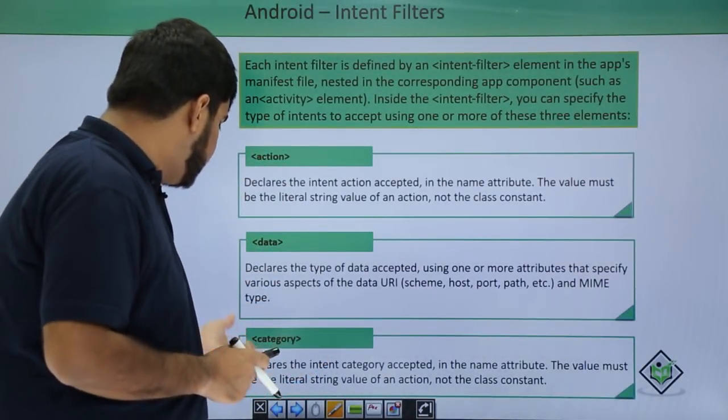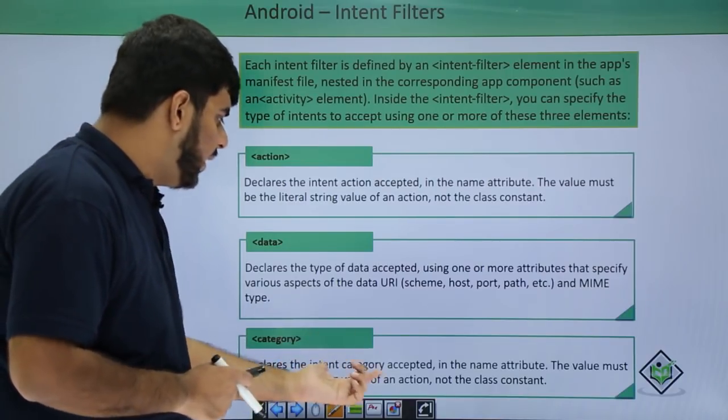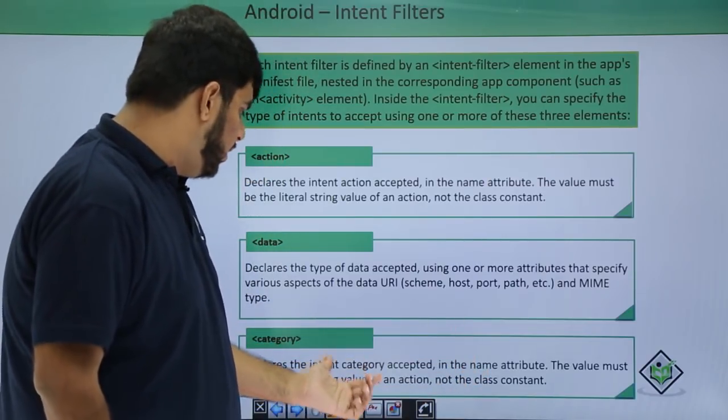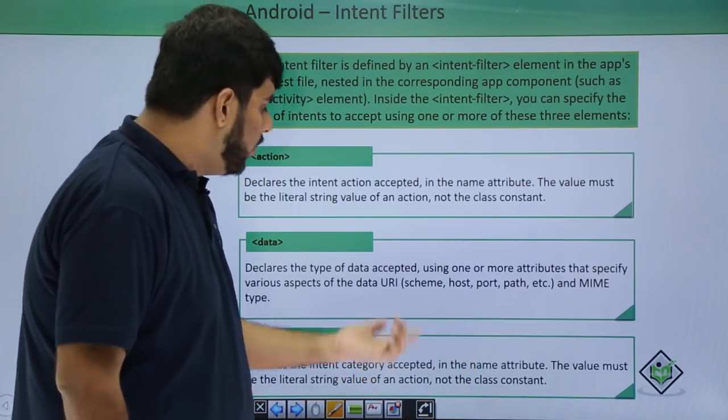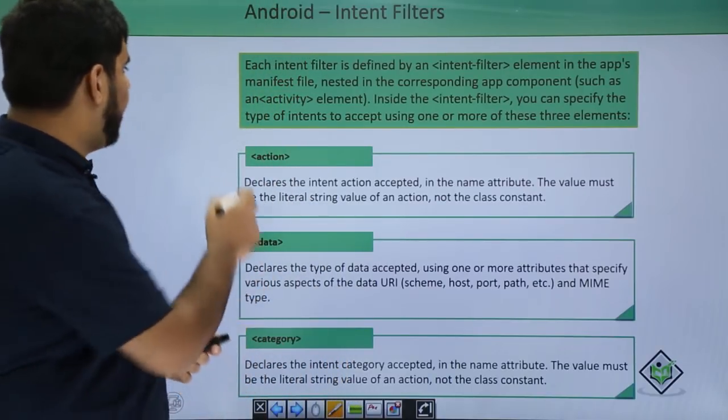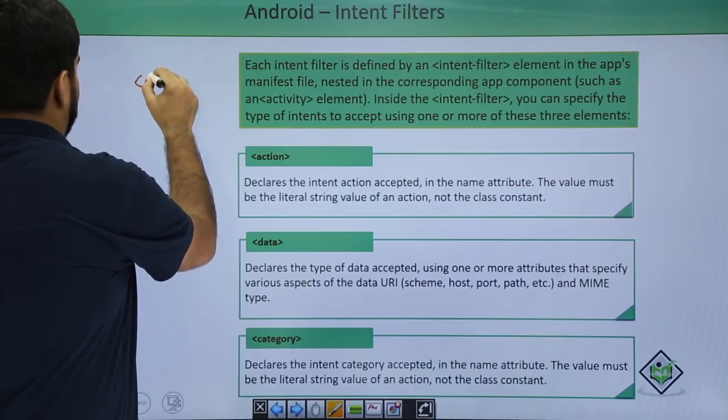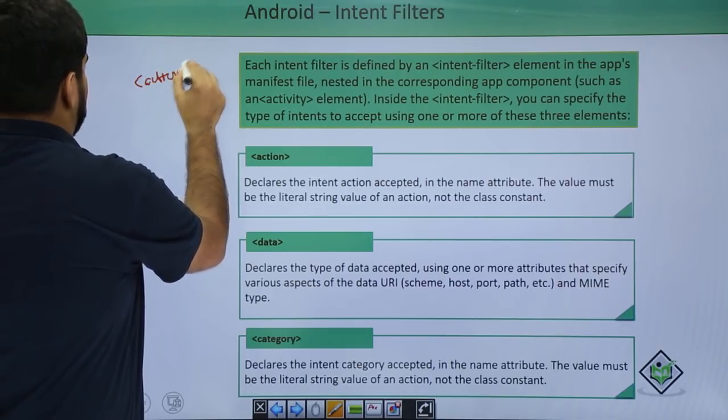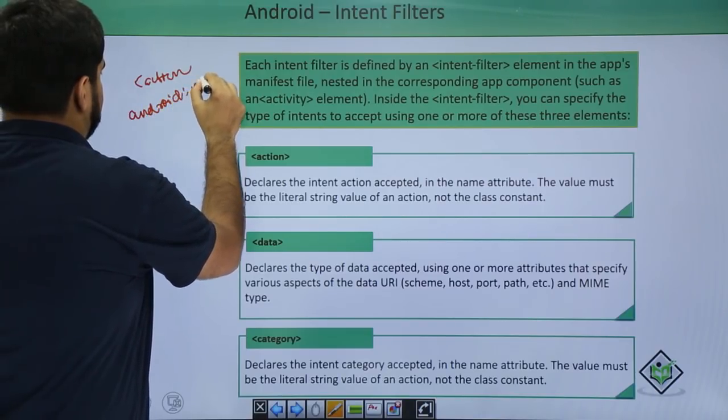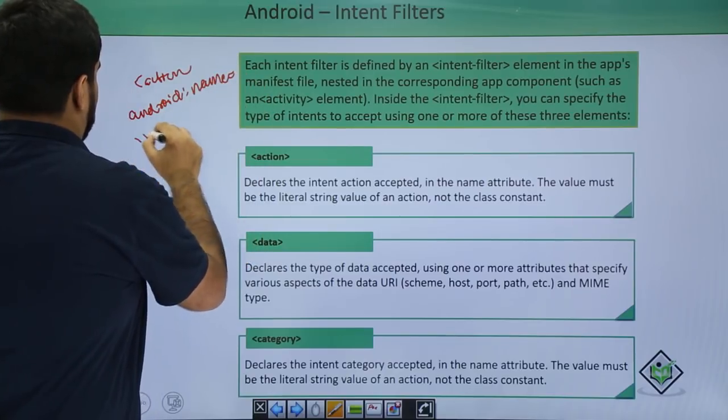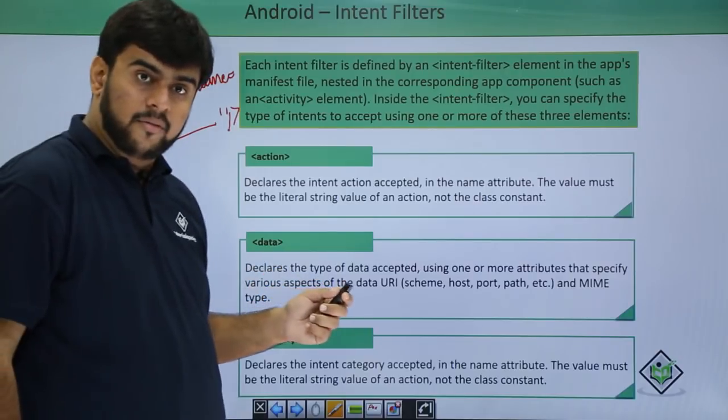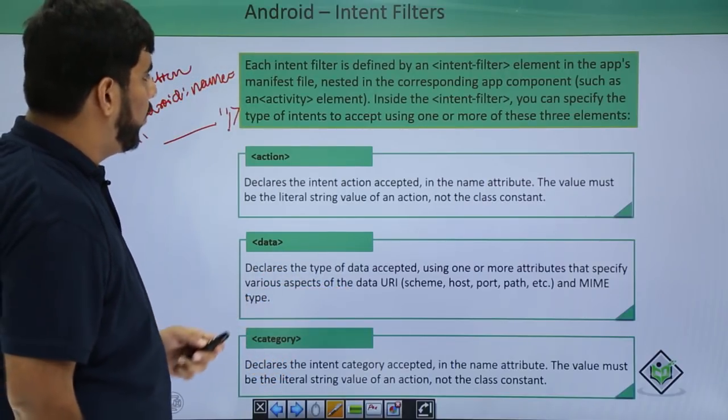The last one being the category, it declares the intent category accepted in the name attribute. The value must be a string value and not a class constant. We define the action in such a way that we write action then android:name and here we pass the action that we want to have. So now let's see how do we do it.